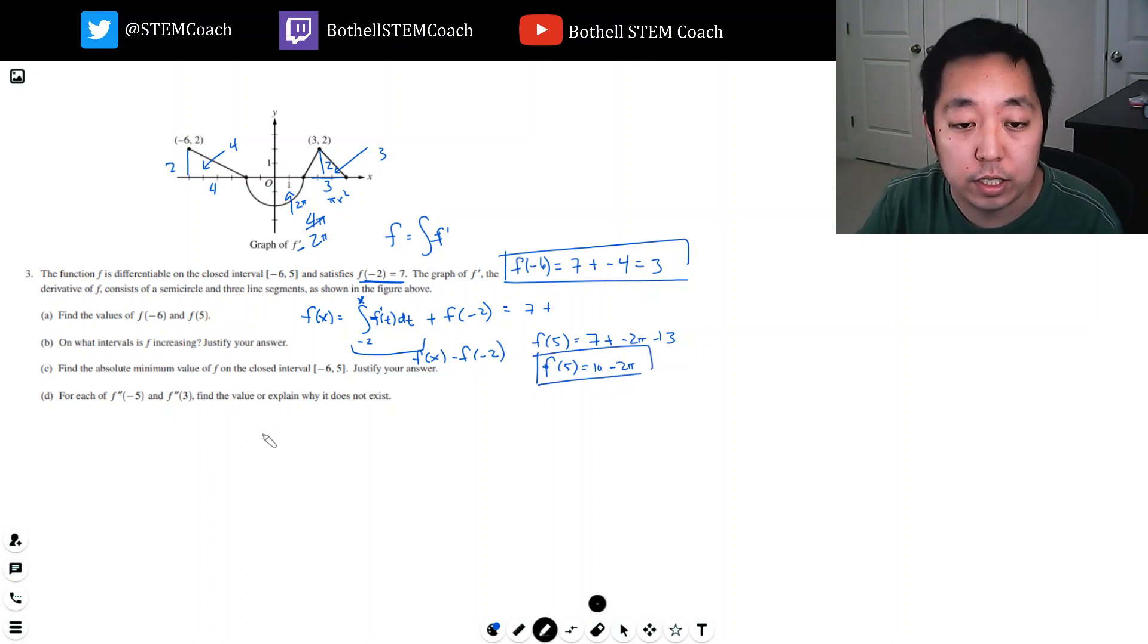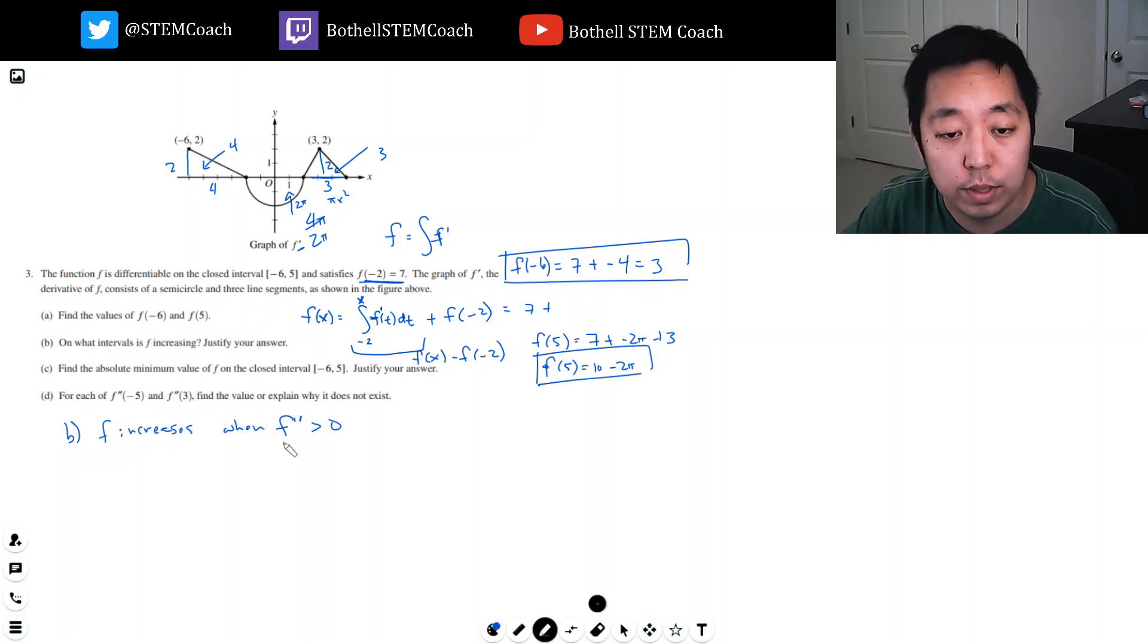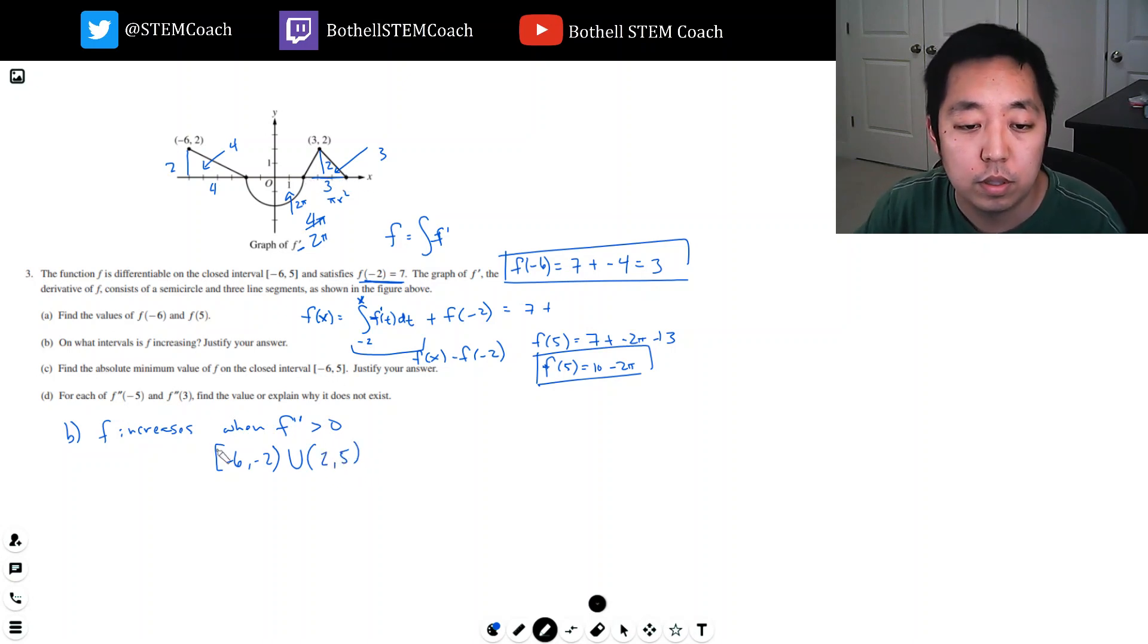So that's part a. Part b, on what intervals is f increasing? f increases when the derivative is greater than zero. So when is the derivative greater than zero? It's whenever the function here is above the x-axis. Because this is the graph of f prime, and when f prime is greater than zero, it's simply when I'm above the x-axis. So that is between negative six and negative two. And I don't include the point negative two because when it's zero, it's not increasing. And then it's positive on this interval from two to five.